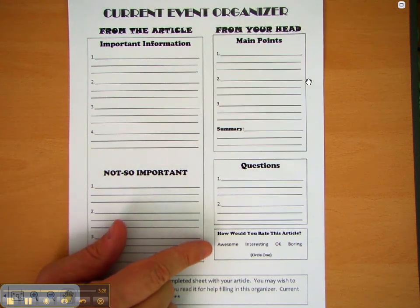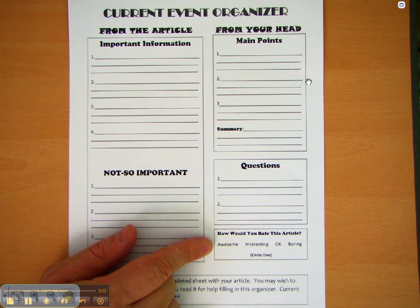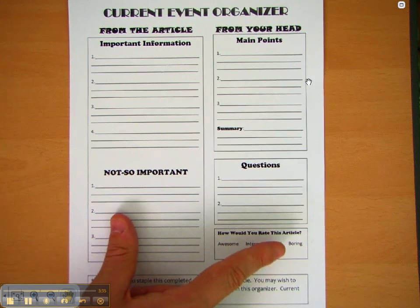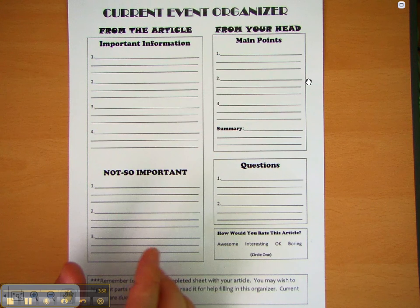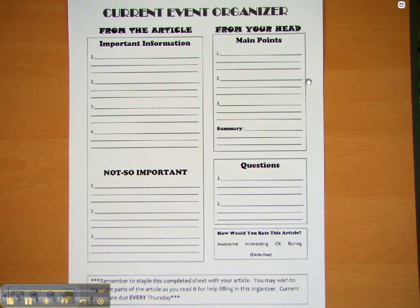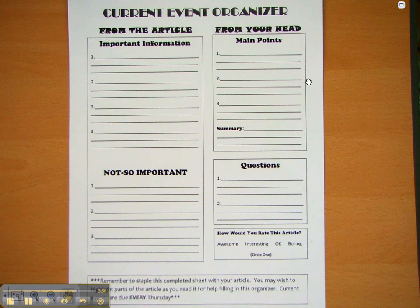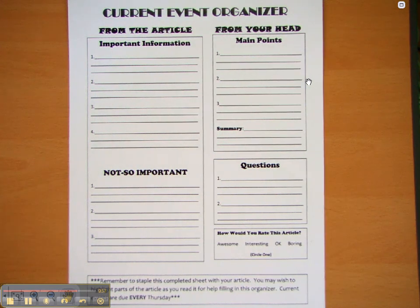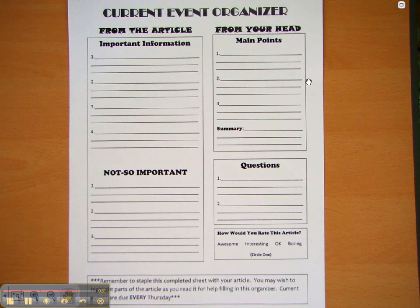The last part is how you would rate the article. Please be honest with yourselves. If you find the article awesome, circle awesome. If you think it's really boring, circle boring. Now, if you keep coming to class every Thursday with articles that you find boring, you and I might have a talk about why you're choosing boring articles every week. Remember, if you're excited about the article, we're going to be excited about the article. I'll be giving you some really cool and fun websites to find funny or amazing articles, so try and spend some time to pick articles that you think we would like to learn about.